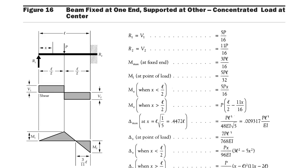Please remember: the maximum bending moment value is 3pl / 16 at the fixed end, and the maximum deflection is pl³ / (48EI × √5) at a distance of 0.4472l. These deflection, bending moment values and distances are very important for competitive examinations. Please download this material as a PDF — the link is shared in the video description.